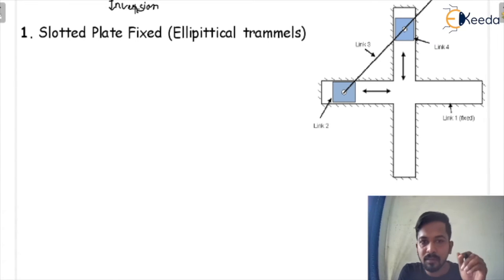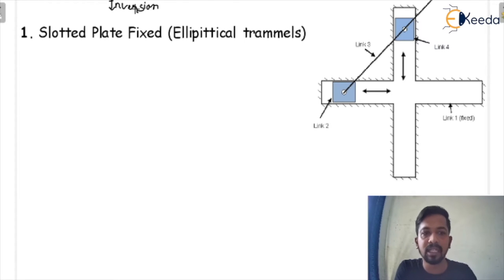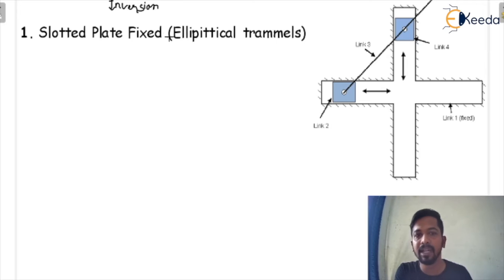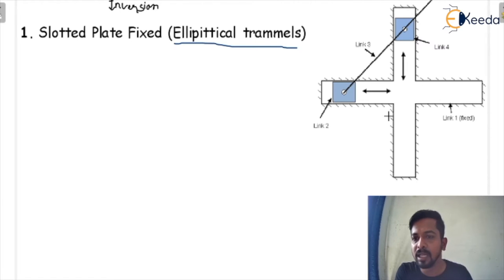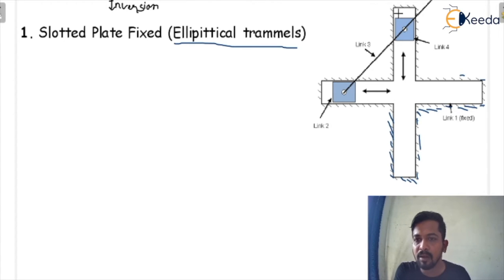We will discuss inversions one by one. First, I am going to consider the slotted plate fixed. When you fix the slotted plate, you will get elliptical trammel — that is basically the inversion of the double slider crank mechanism. Now, what is the slotted plate in this mechanism? This here is basically the slotted plate.